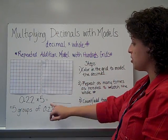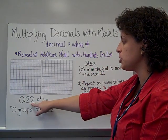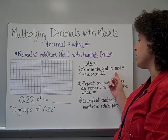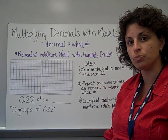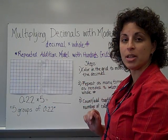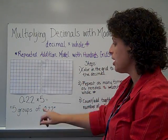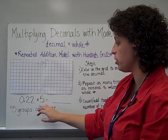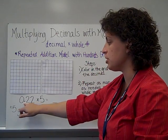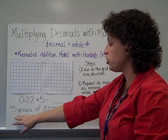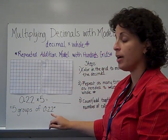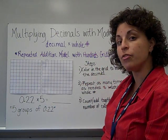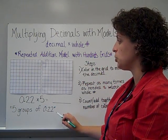Our first step to solve this problem, 0.22 times 5, is going to be to color the grid to model the decimal. We've done repeated addition models in the past this year, and we know that this problem could be rewritten with a 5 first times the 0.22, which would mean I need 5 groups of 22 hundredths.